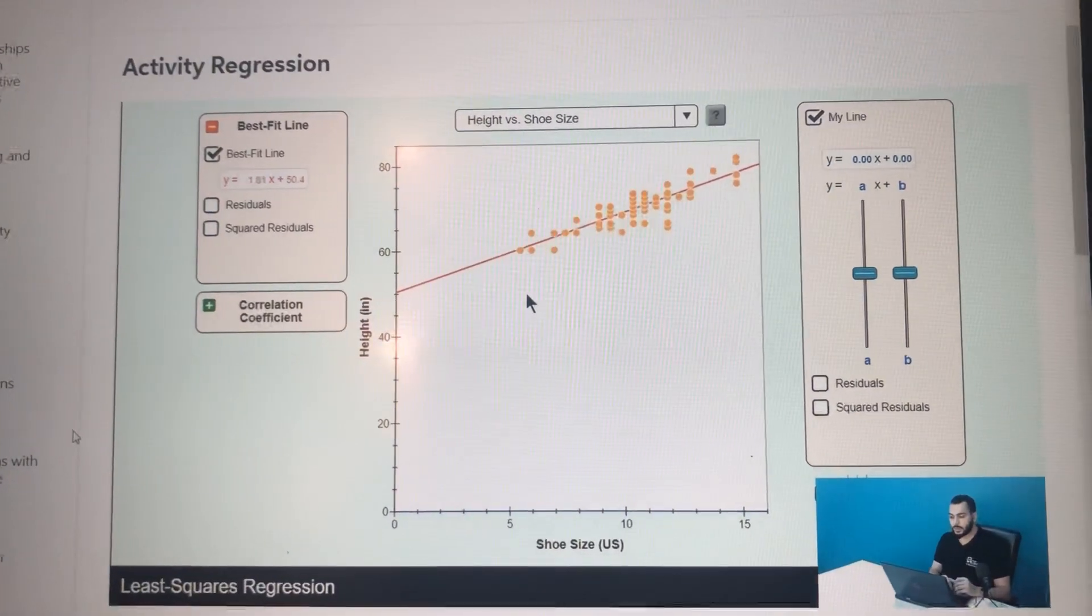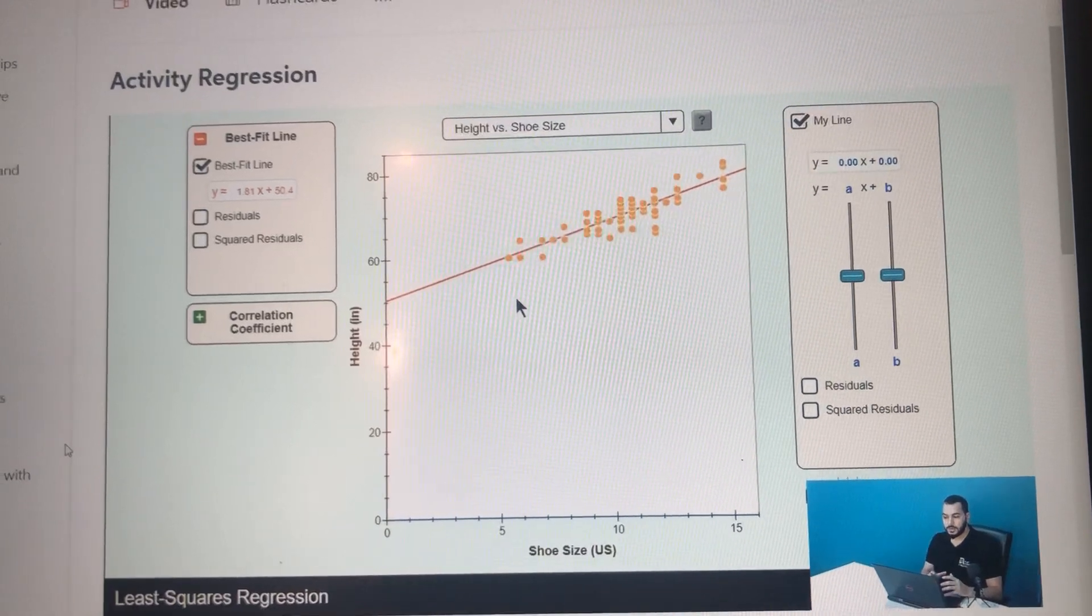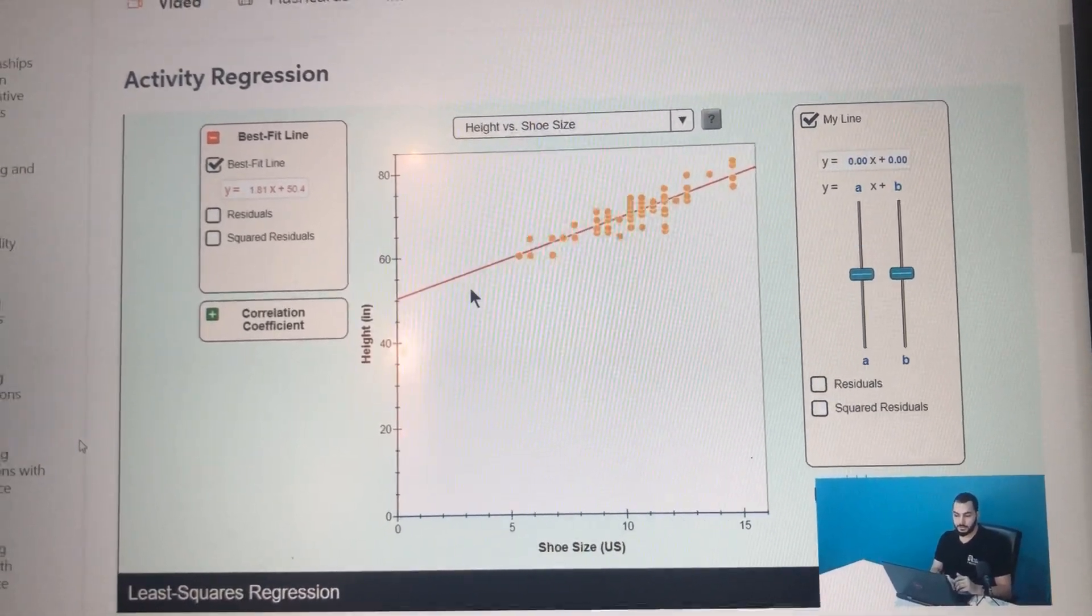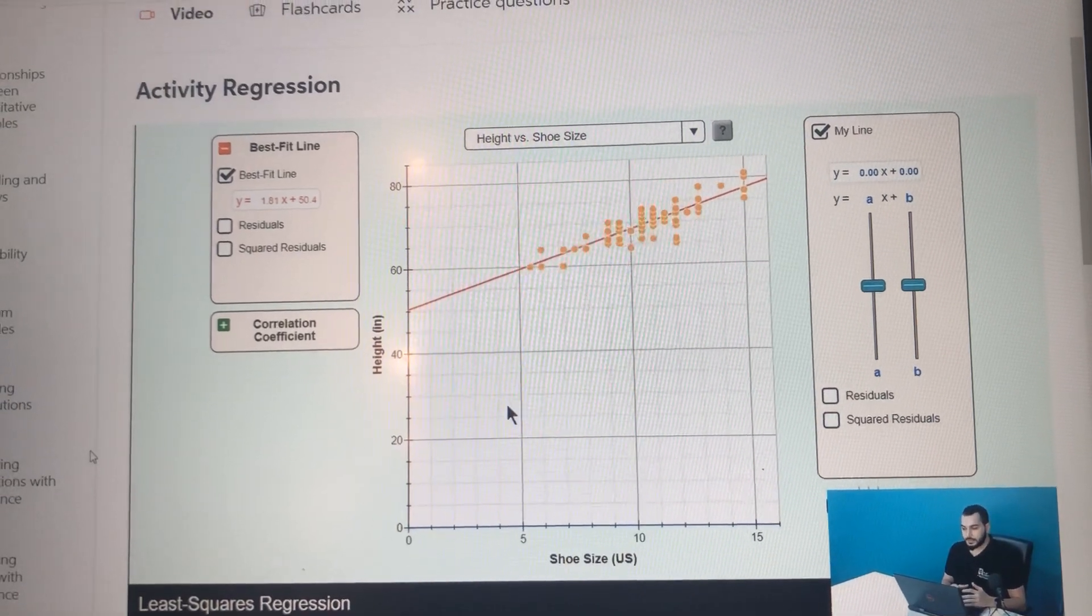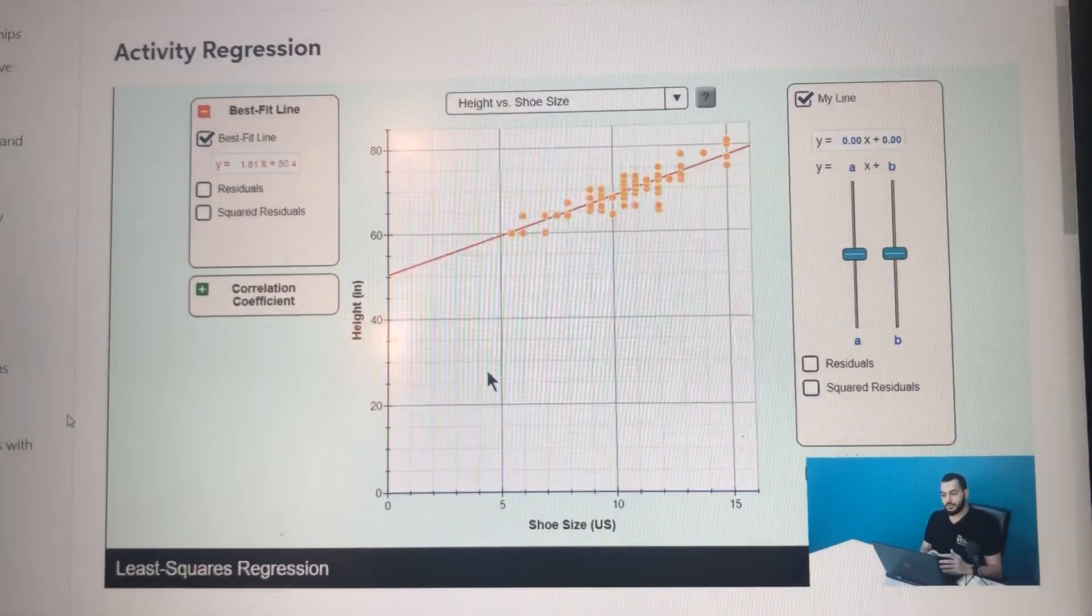The best fit line is trying to find the line that approximates the relation between the two variables, as you can see here. The line that you see is the approximate and predicted value of the variable.